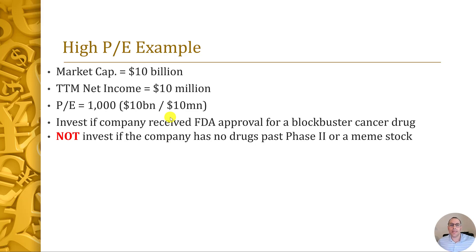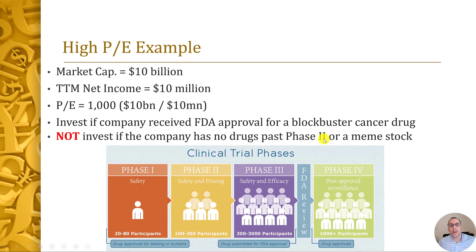So maybe investing in a $1,000 PE company is a good idea, at least in this situation. But what if this was a meme stock that didn't have much growth potential but everybody was buying it up? In that situation we'd probably want to avoid this stock. But let's say it was a company that developed drugs but had no drugs past phase two of the FDA trials — we may want to avoid the stock. In order to get FDA approval for a drug, it could take 10 or 15 years and cost millions of dollars. So you might have to spend 10 years and $50 million before you get any revenue.